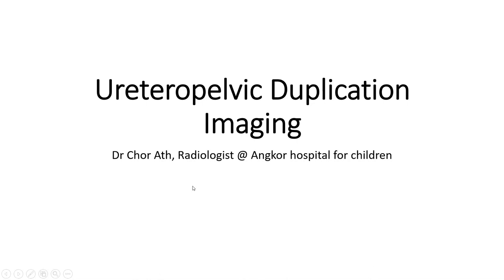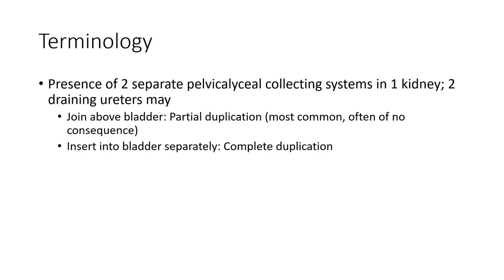Hello, everyone. Today I'm going to show you about ureteral pelvic duplication. Terminology: presence of two separated pelvicalyceal collecting systems in one kidney. Two draining ureters may join above the bladder — partial duplication — most common, often of no consequence. Or insert into the bladder separately — complete duplication.